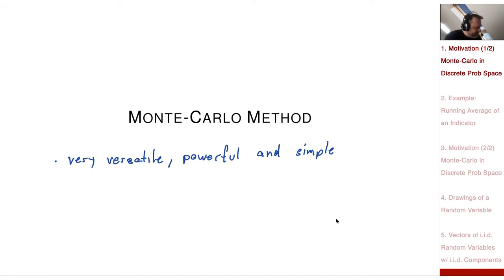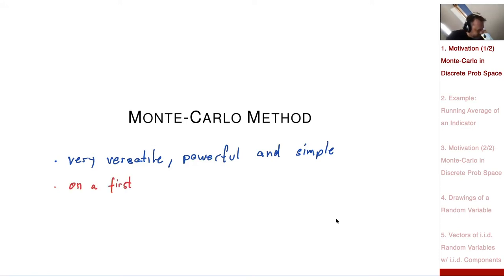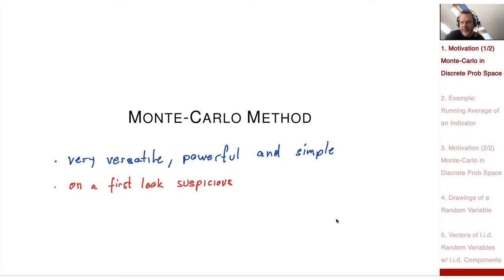It will keep code clean and simple. On a first look, it is a bit suspicious. Why is it suspicious? It's a method to approximate, say, an integral or an expectation, and your approximation result — your convergence result — holds only in a probabilistic sense.